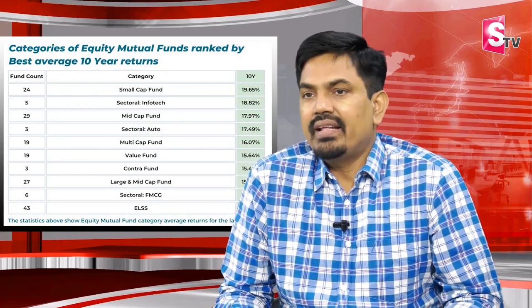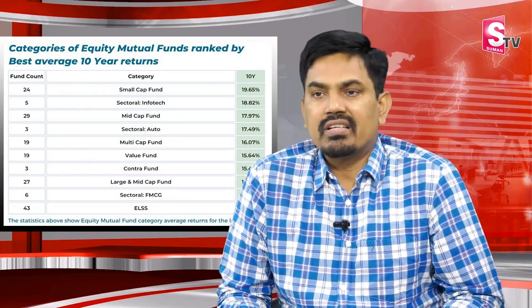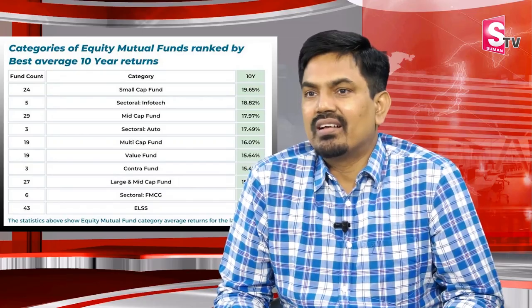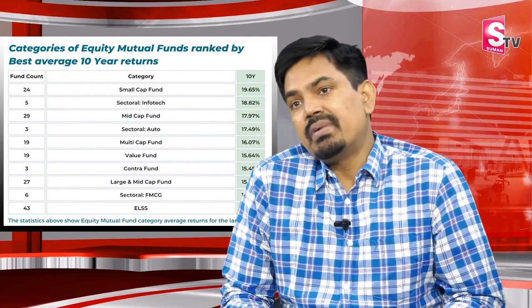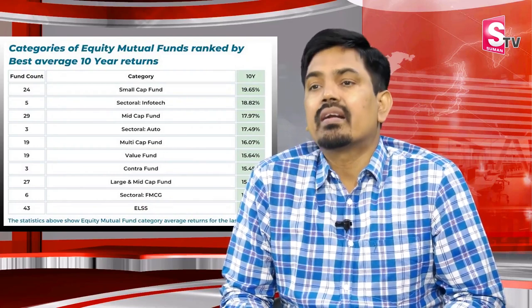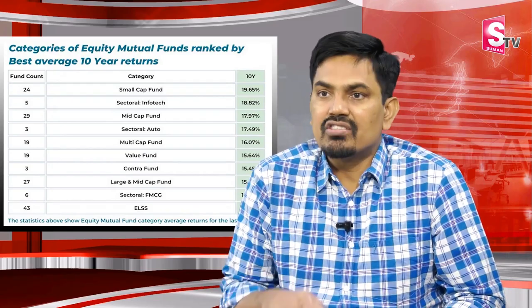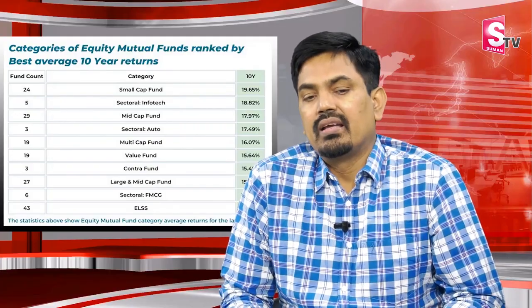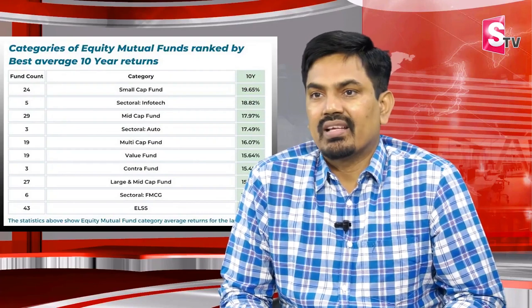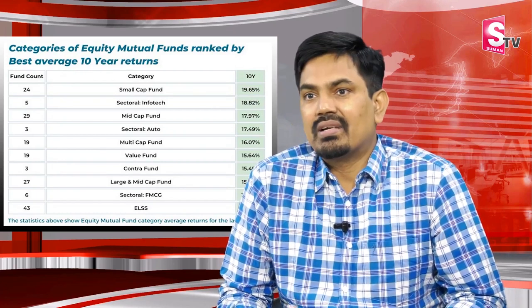For example, IT has been underperforming in the last one year, but there is no issue with the company management. Contra funds work the same way — they find good stocks in sectors like finance, FMCG, pharma, and infrastructure.